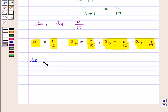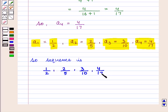So, the sequence will be given by 1 by 2, 2 by 5, 3 by 10, 4 by 17 and so on. This is the required sequence.